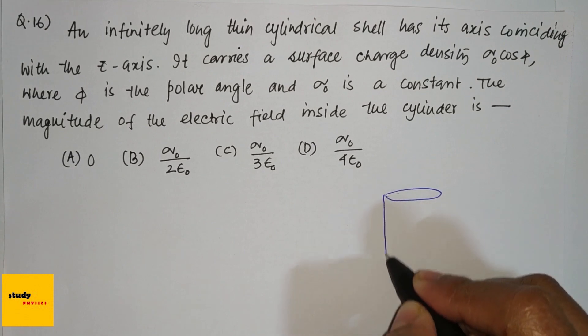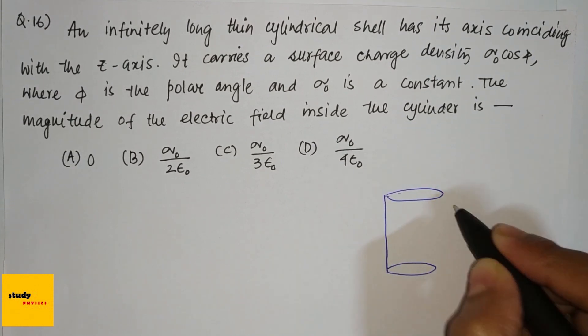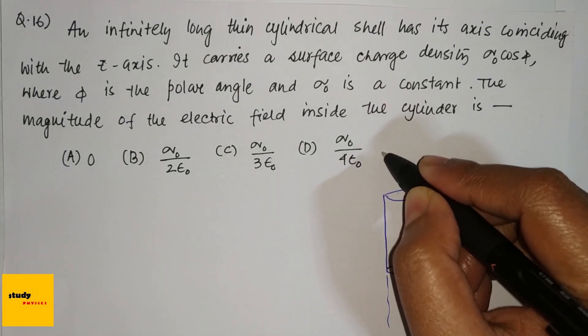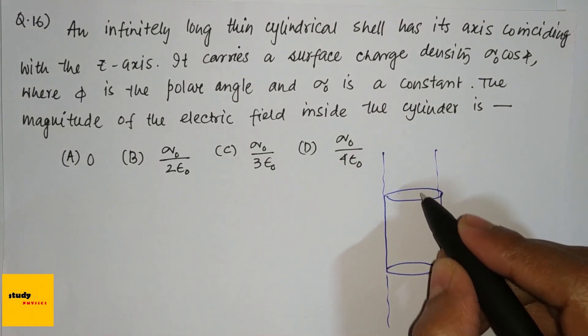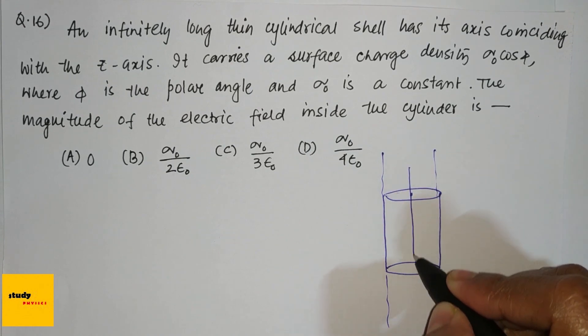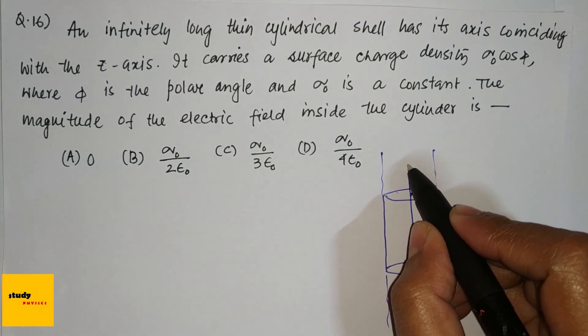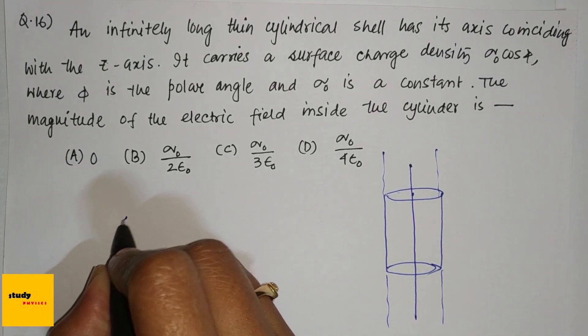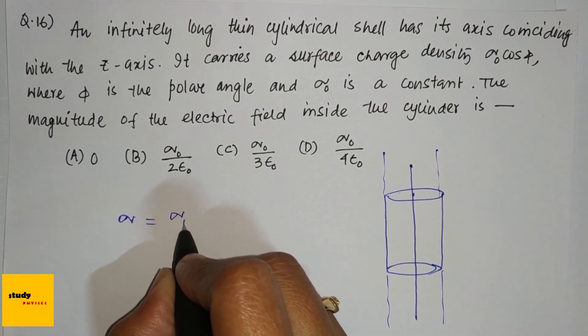So first, this is an infinitely long cylinder. This is the center, and they said the surface charge density, which is sigma, is sigma_0 cos(phi).